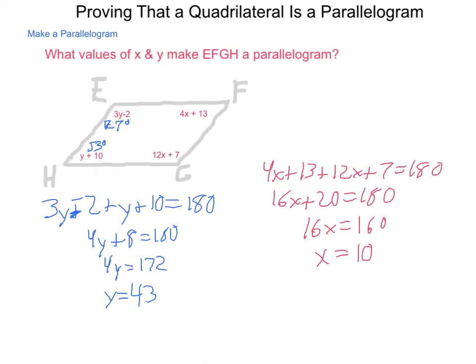If X is 10, then we get here 127 degrees for angle G, and 53 degrees for angle F. So, not only are consecutive angles supplementary, but both pair of opposite angles are congruent. So, we've established the parallelogram in multiple ways.